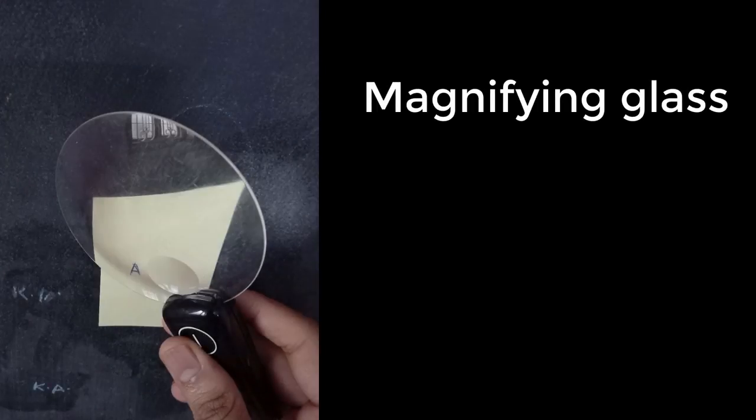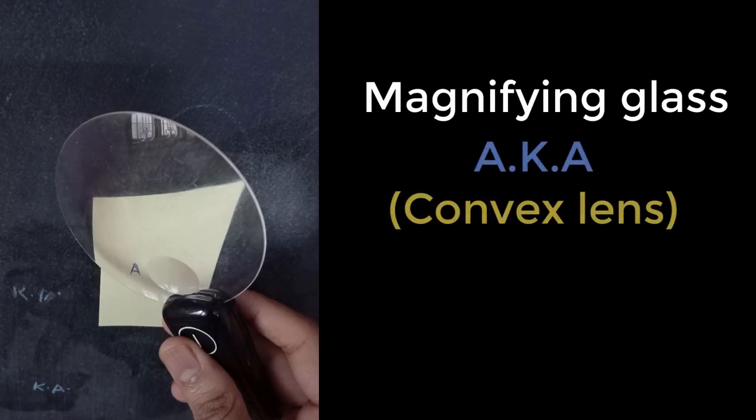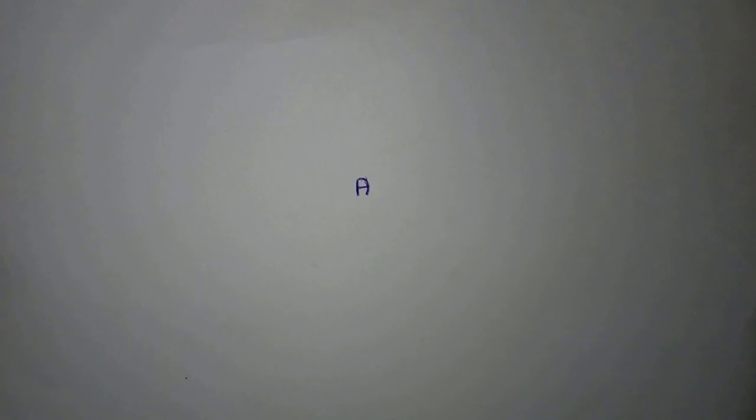Let's explore how a magnifying glass, which is nothing but a convex lens, helps us magnify things. Let's explore this by taking an example — suppose we wanted to examine the details of this letter A.